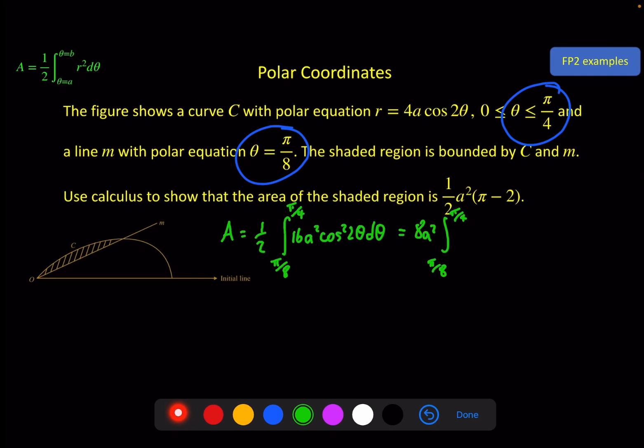So again I'm going to use that identity and change that into ½ + ½ cos 2 of the angle. And the angle is 2θ. So that becomes 4θ dθ. Then we go ahead and integrate this. So we've still got the a² and the 8 outside. We get θ/2 + 1/8 sin 4θ from π/8 to π/4.